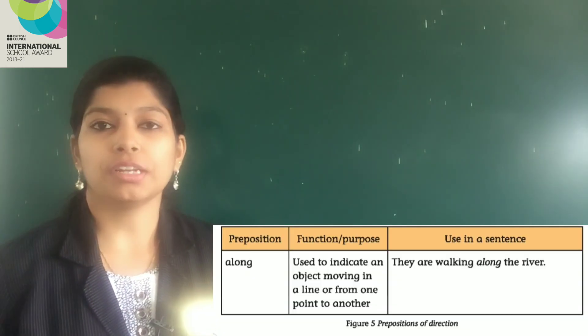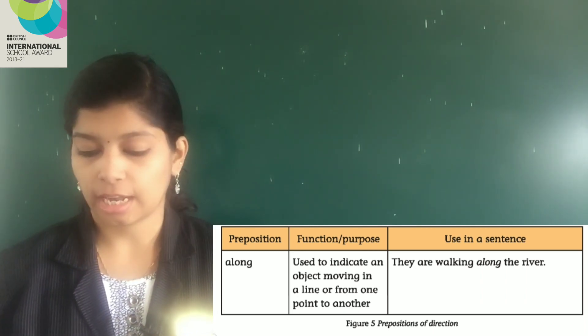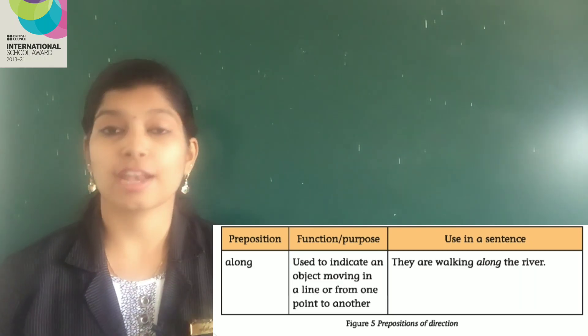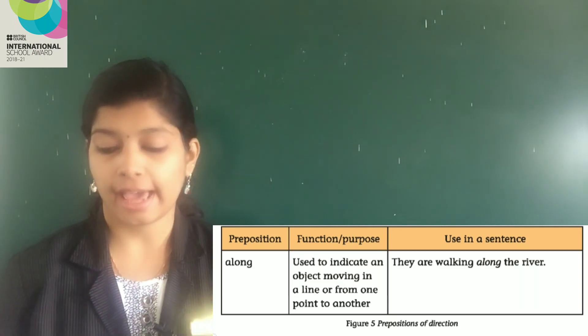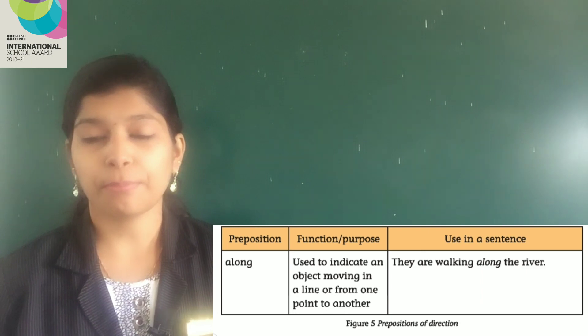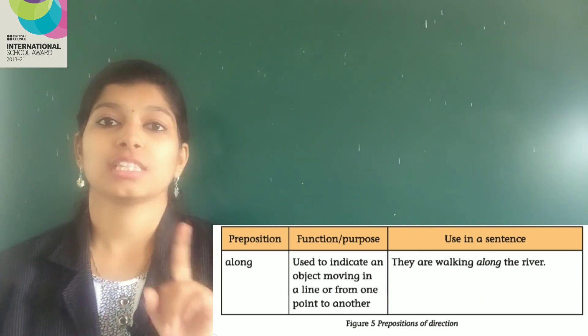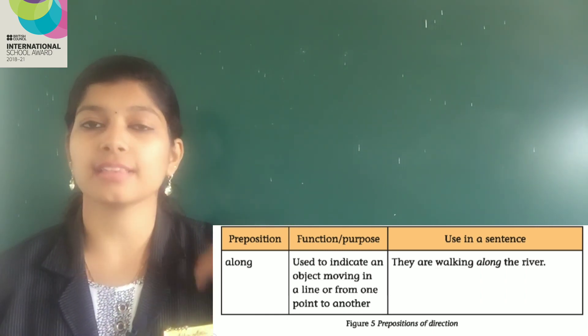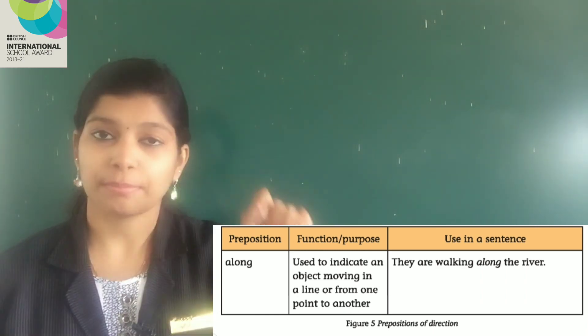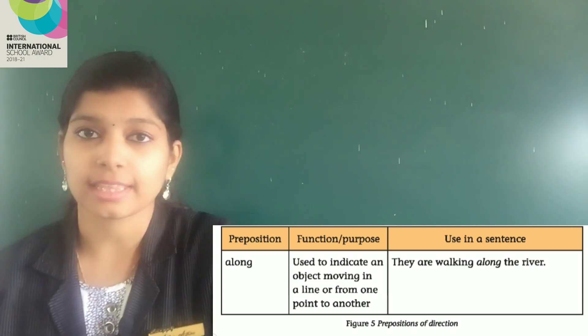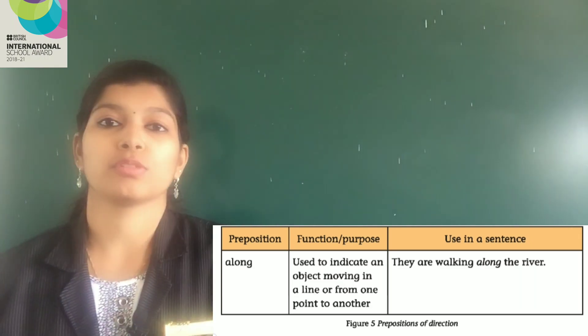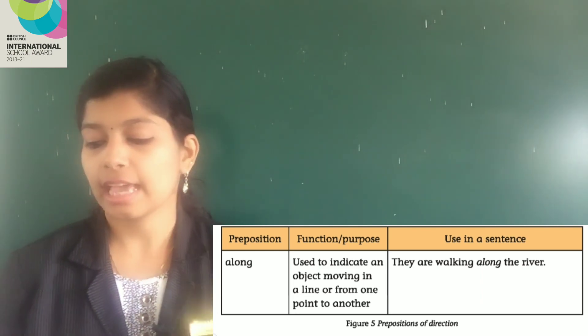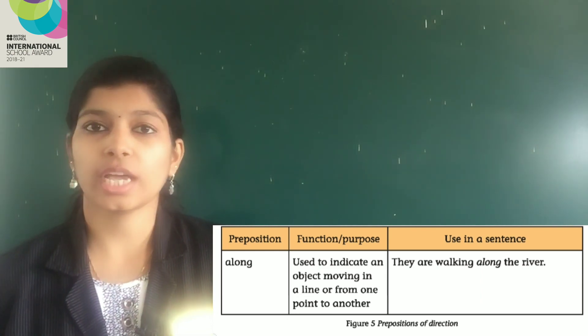Page number 21. Along. What is its function? Used to indicate an object moving in a line or from one point to another. If something is moving in a line or going from this place to that place, that means from one point to another, we will use the preposition 'along'. For example, they are walking along the river.